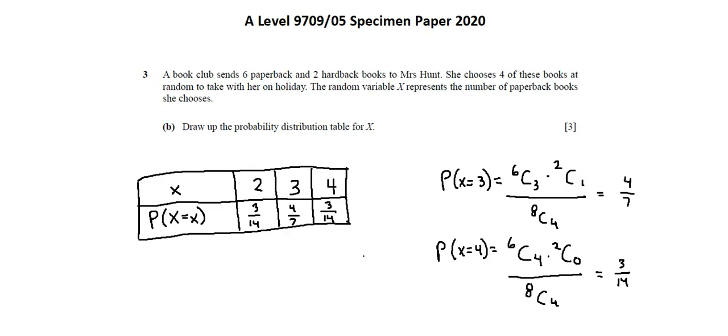And as a confirmation, when I add three over 14 plus four over seven plus three over 14, I have 14 over 14, or one. The sum of the probabilities in the probability distribution table always needs to be exactly one. That's an important confirmation. That's an important check on your calculations when you're drawing up a probability distribution table.